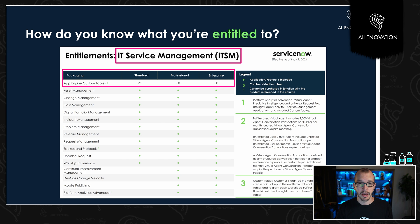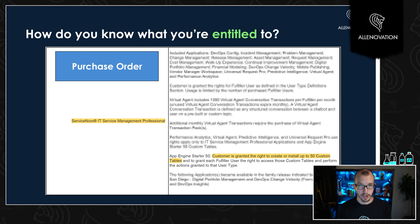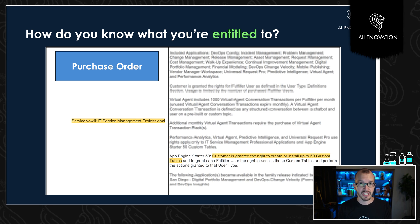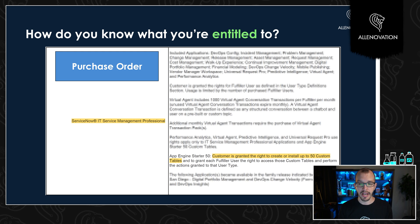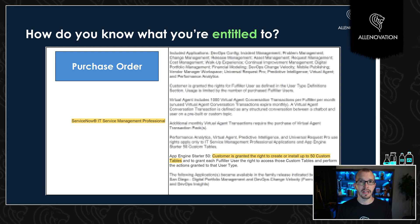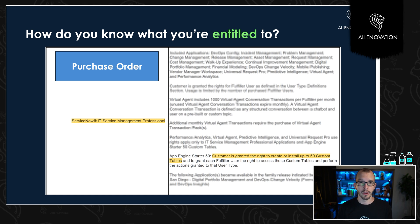But the story doesn't end there. There's actually another step you want to look at before making that determination on creating a custom table. That's really taking a look at your purchase order. I have a screenshot here from a very real purchase order. If you have access to one, or you can ask your client for their purchase order, scroll down to the terms and conditions section and you'll see the package that was purchased. This is an ITSM Pro purchase order, and you'll notice where it says App Engine Starter 50 — customers granted the right to create or install up to 50 custom tables. The purchase order is the law here; this is the record of truth. This is really what you would want to go off of to make sure and double-check if you're allowed to create those custom tables or not.